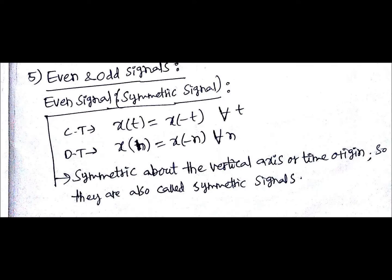A very easy type of signal which you might have known already is even and odd signals. An even signal is a symmetric signal, defined in continuous time as x(t) equals x(-t) for all time t.